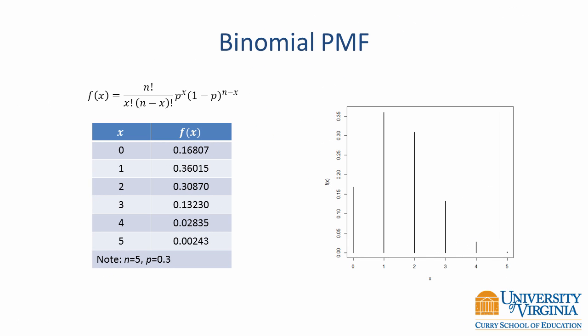The binomial distribution is an example of a discrete probability mass function. It gives the probability of the number of successes in independent trials of an experiment with only two possible outcomes. The function is shown here along with a table of values and probabilities, and the figure illustrates that information. For example, suppose only 30% of examinees have ever answered a particular test question correctly. In a sample of five students, the probability that no one answers it correctly is 0.16807, and the probability that exactly three students answer it correctly is 0.1323.